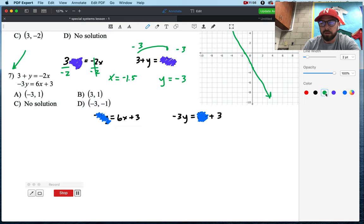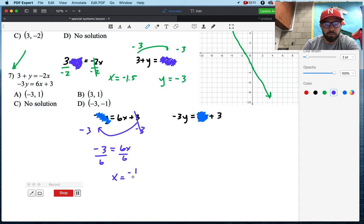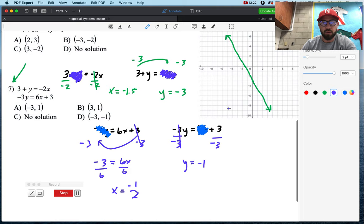So, moving on. Let's come down here to the bottom. Subtract 3, subtract 3. And I have negative 3 equals 6x. Divide 6, divide 6. x equals negative 1.5. Over here, let's divide negative 3, divide negative 3. y equals negative 1.